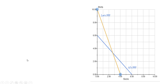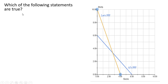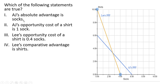Moving on with the same figure, let's evaluate the following statements to see whether they're true or false. Statement 1: AJ's absolute advantage is in socks. If AJ spent his entire day producing socks, he could produce 6 socks, whereas in an equal amount of time Lee could only produce 4. So that statement is true.